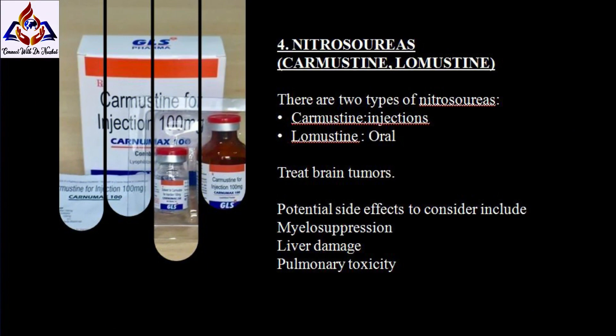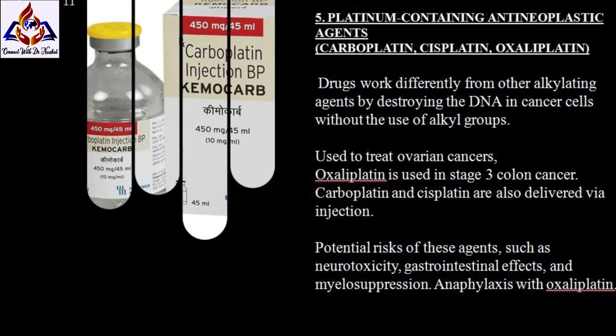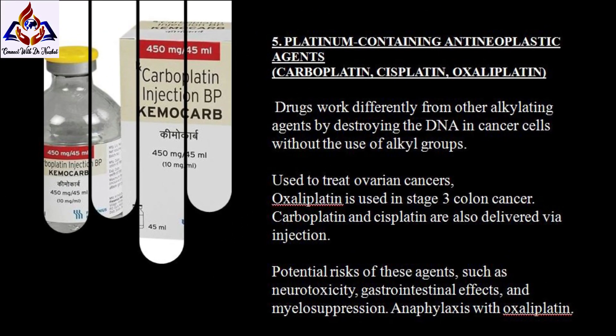Fourth, nitrosoureas — drug names are carmustine and lomustine. These are two types of nitrosoureas: carmustine injections and lomustine oral tablets. Oncologists may prescribe these to help treat brain tumors. Potential side effects include myelosuppression, liver damage, and pulmonary toxicity, which affects the lungs.